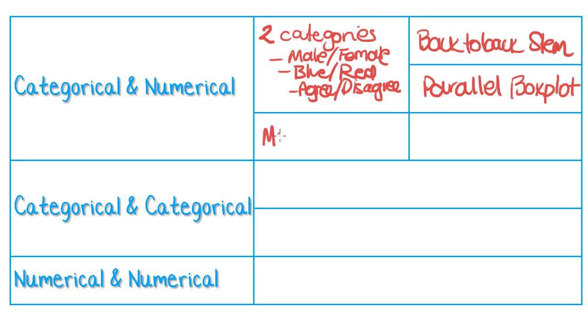When you had more categories, so, you know, going on this blue, red example, you had blue, red, green, orange, purple, yellow, what have you, then you would represent that also as a parallel box plot. You would just have a lot more boxes on the plot.